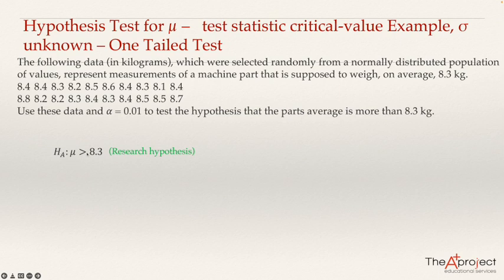The opposite of this, the opposite of being more than 8.3 will be less or equal than 8.3. So the null hypothesis will be mu less or equal than 8.3. Some researchers type here mu equal 8.3 because actually what we are going to do is assume that mu is equal to 8.3.